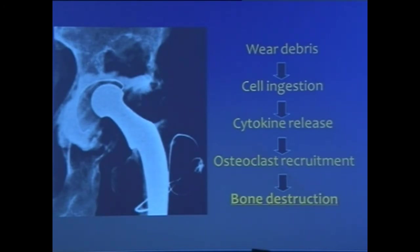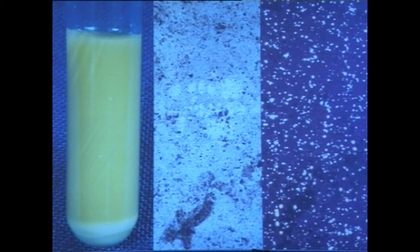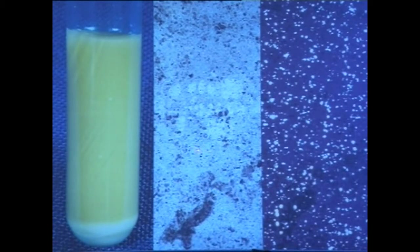The wear debris gets ingested, releasing cytokines and osteoclastic recruitment to remove the debris, finally resulting in bone destruction. When a surgeon has a patient with a swollen knee, they aspirate this turbid fluid. Is this infection or polyethylene debris? As pathologists, we spin it and put a drop on a glass slide. This does not look like infection — it's not polymorphonuclear or chronic inflammation. When you polarize it, you see it is all implant debris, confirming it was implant material and not infection, and thereby helping you decide what to do next.